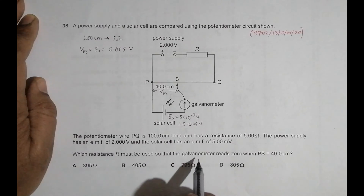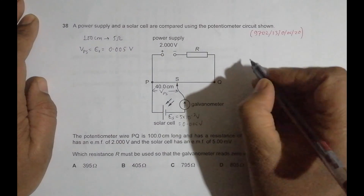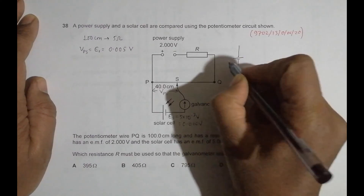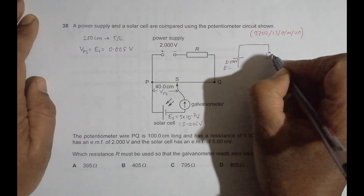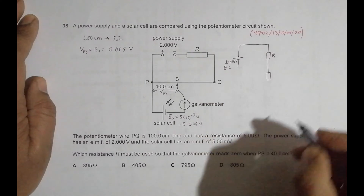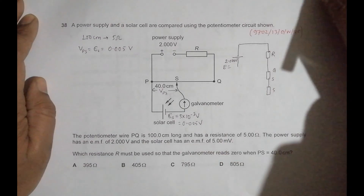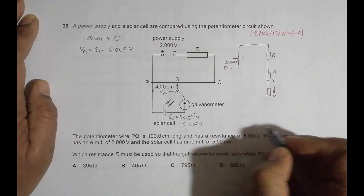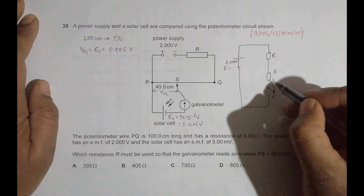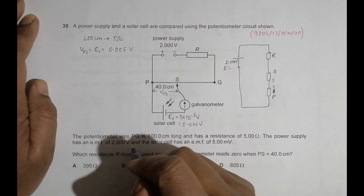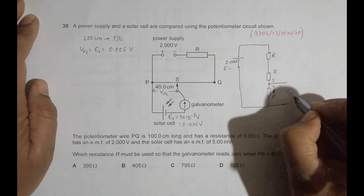To solve this, I'll redraw the circuit. We have E equal to 2 volt, then resistance R, then the potentiometer wire from Q to S and then S to P. SP is 40 centimeters, and VPS is the voltage across SP, which equals 0.005 volt.